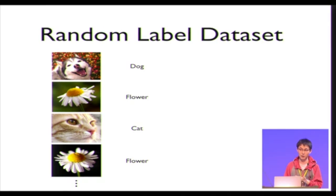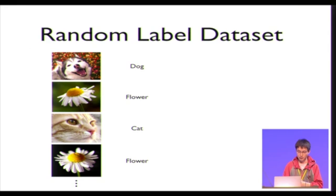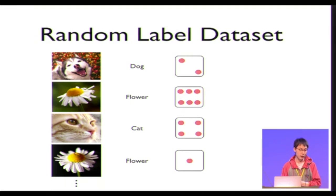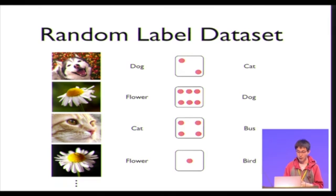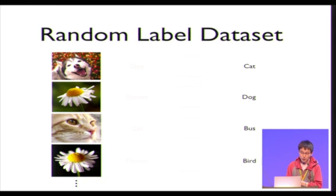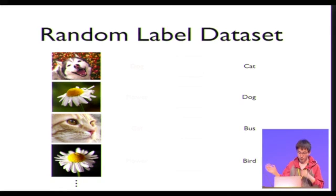It's a set of simple experiments designed to measure the effective capacity of your models by trying to fit random noise or data that does not contain meaningful structures or patterns. In particular, we consider an experiment with random labels. We take an existing standard benchmark dataset, such as CIFAR-10 or ImageNet, and then we flip a K-sided dice for each of the images, where K equals the original number of classes. We assign a new label according to the dice flip and forget the old labels, so each image is assigned a new label completely independently. For example, flowers that originally belonged to the same class could now have completely different labels while being visually very similar.